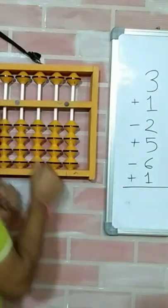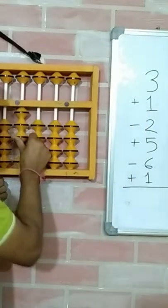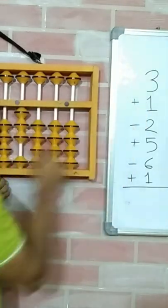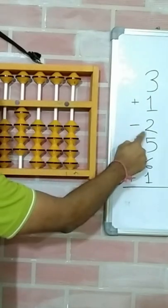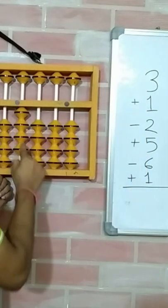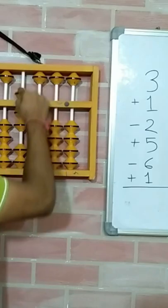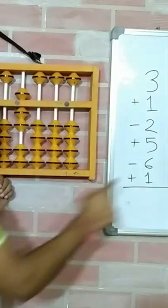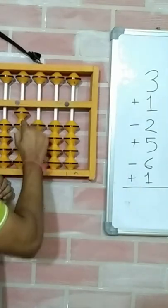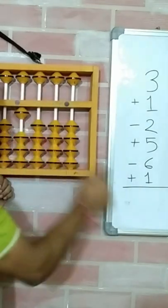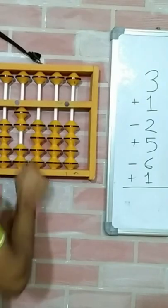So first, plus 3. Then plus 1. Then minus 2. Then plus 5. Then minus 5 and 6. Then plus 1.